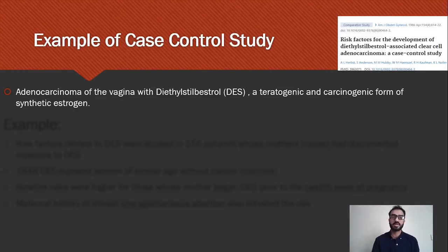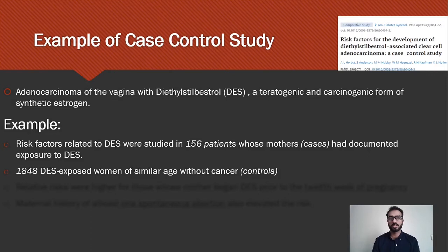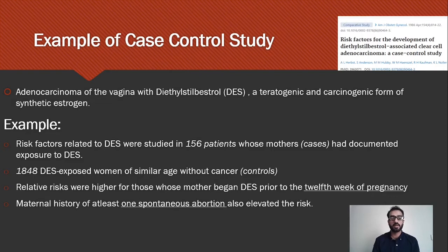Another example of a case control study is adenocarcinoma of the vagina with diethylstilbestrol (DES). DES was used in the past to prevent miscarriage, but was later found to be teratogenic and its use was stopped. In this study, risk factors related to DES were studied in 156 patients whose mothers had documented use of DES. For controls, 1,848 other women with DES exposure who did not develop cancer were interviewed. Relative risks were higher for children whose mothers had documented DES use before the 12th week of pregnancy, or had a history of at least one spontaneous abortion.